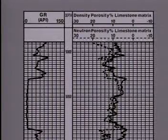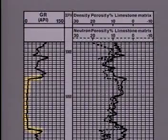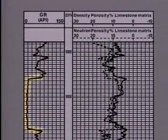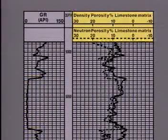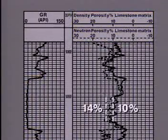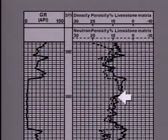Let's now attempt to evaluate the hydrocarbon potential of our West Texas well. We focus our attention on the 56-foot-thick carbonate formation defined by the gamma-ray log. The neutron density combination log we looked at earlier indicated a 28-foot interval of porosity, ranging between about 10 and 14 percent, from here to here.